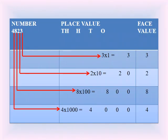Now children, understand this through an example. The number is 4823 and we have to find the face value and place value of all four digits. Let's start with face value. Face value of a digit in a number is the digit itself. So face value of 3 is 3, face value of 2 is 2, face value of 8 is 8, and face value of 4 is 4. Position doesn't matter for face value. Now to find place value, we multiply the digit by its place according to the place value chart.